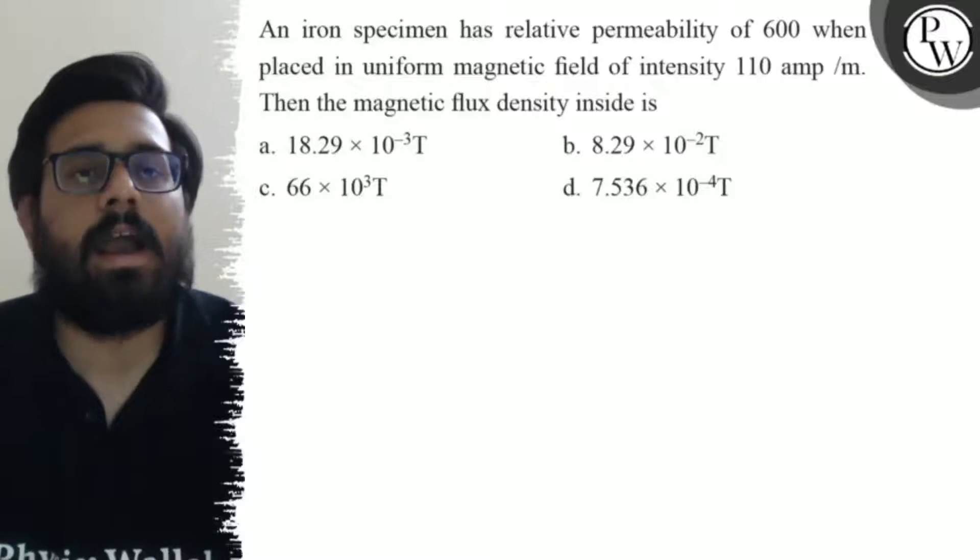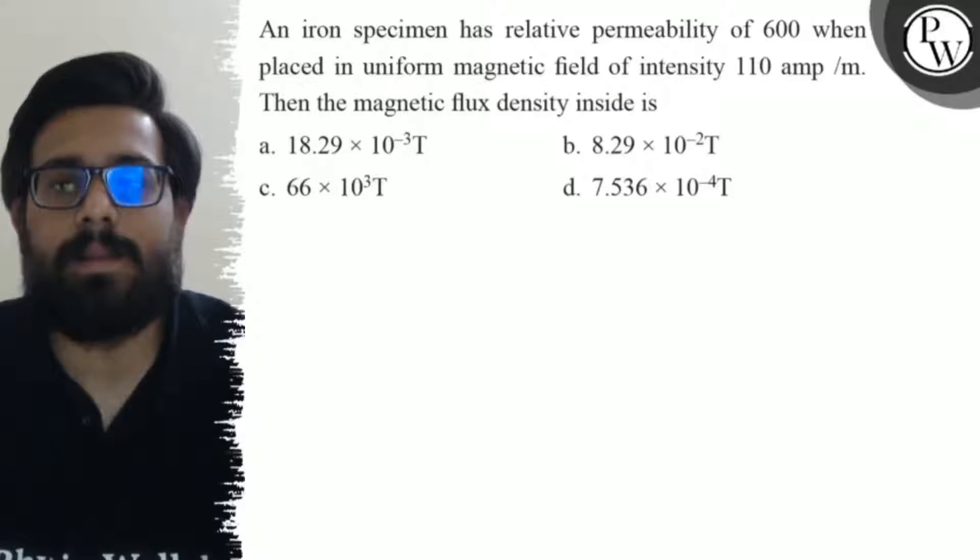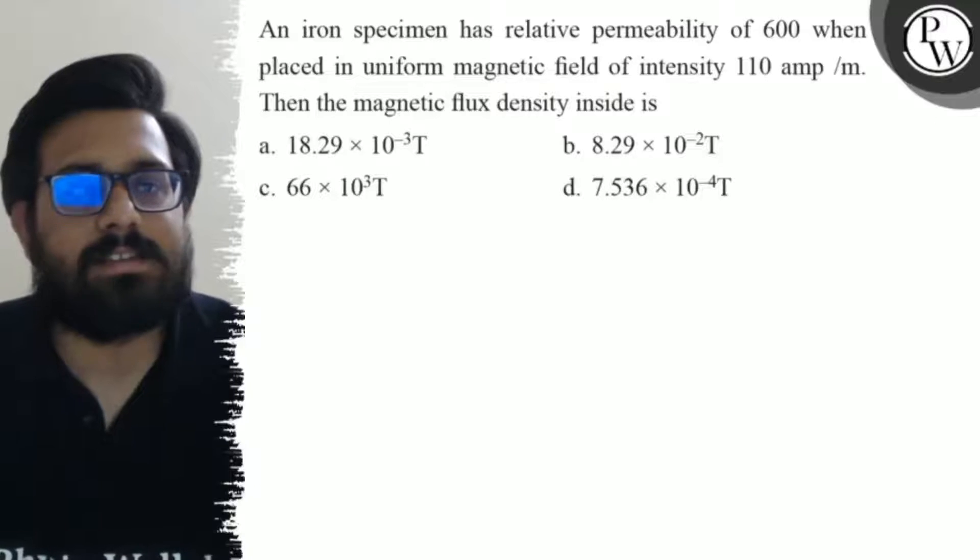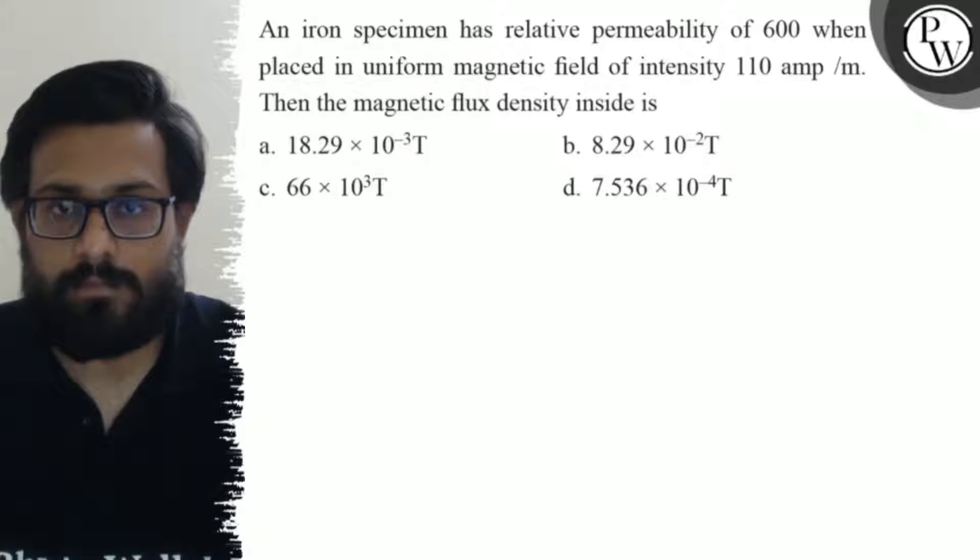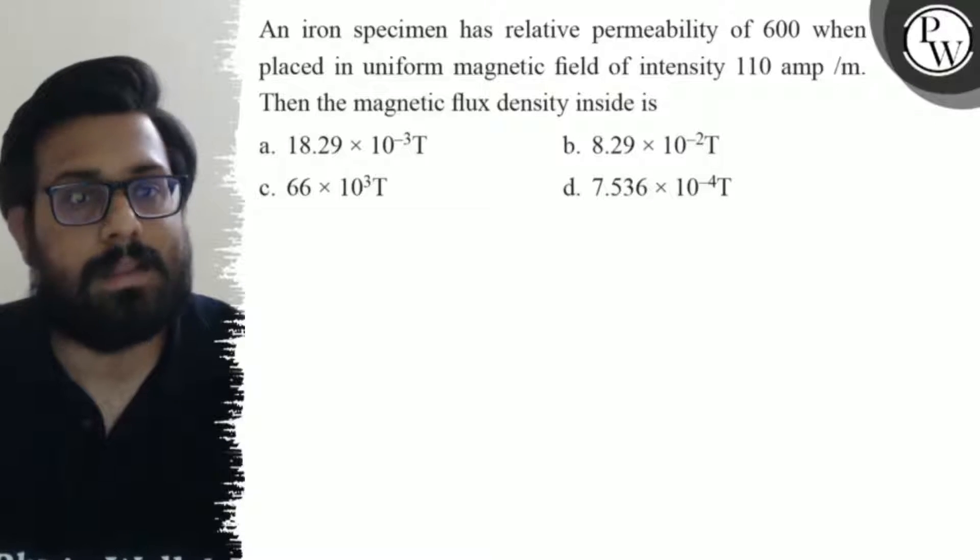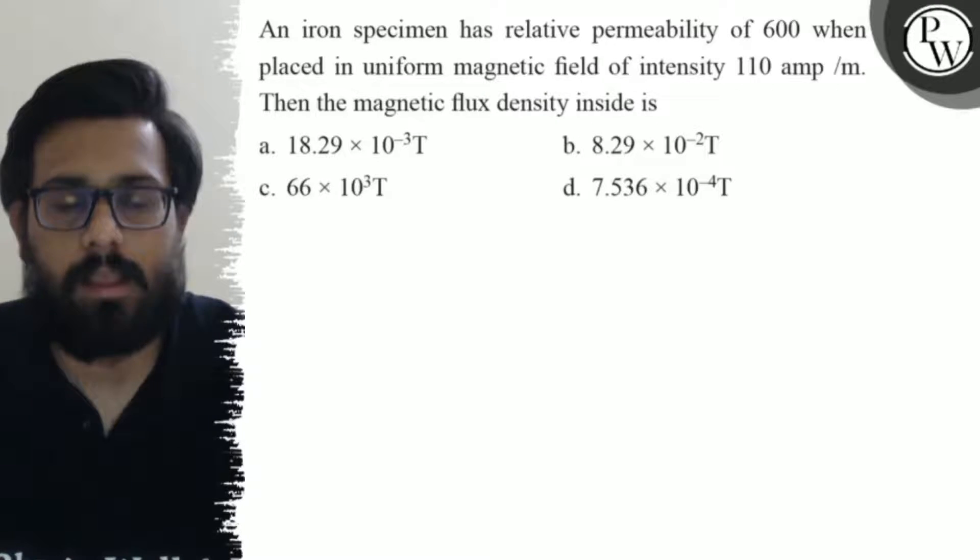Hello bachos, so let's see the question. An iron specimen has relative permeability of 600 when placed in uniform magnetic field of intensity 110 ampere per meter, then the magnetic flux density inside is. The first option is 18.29 into 10 to the power minus 3 tesla.